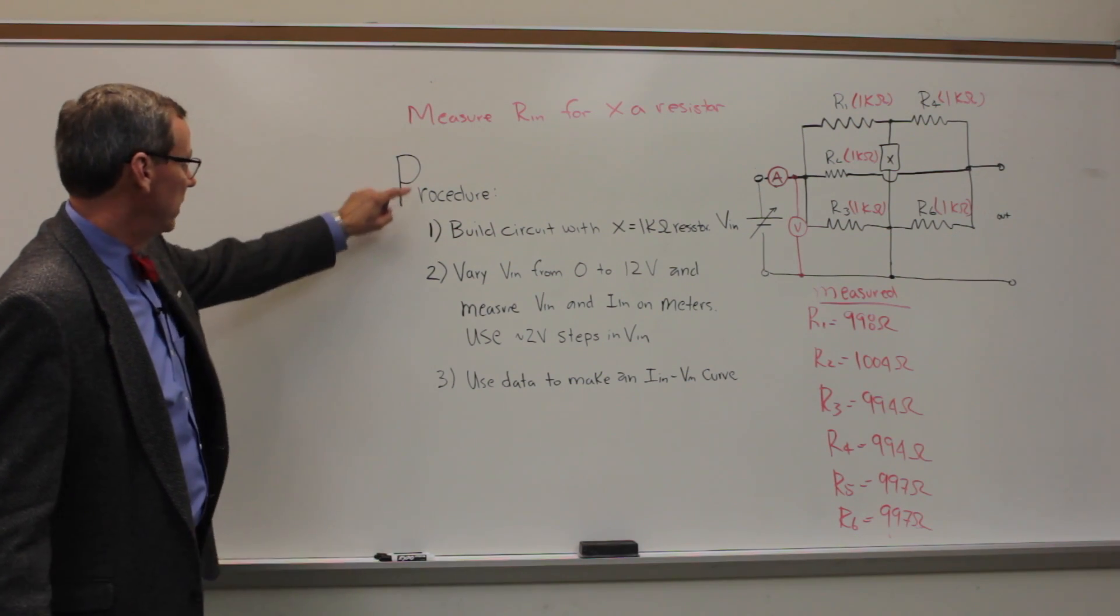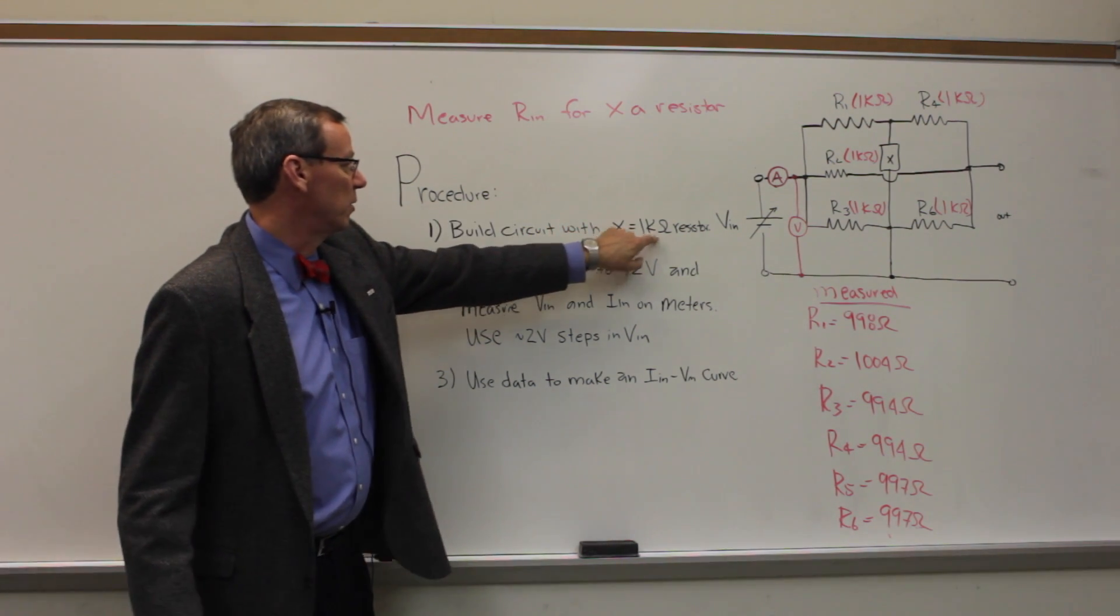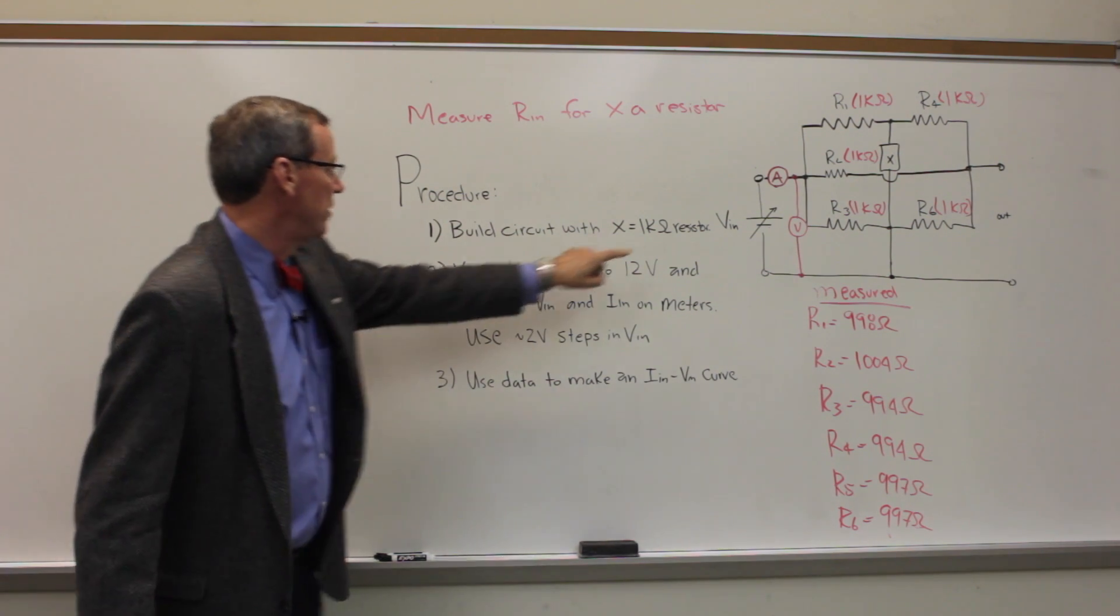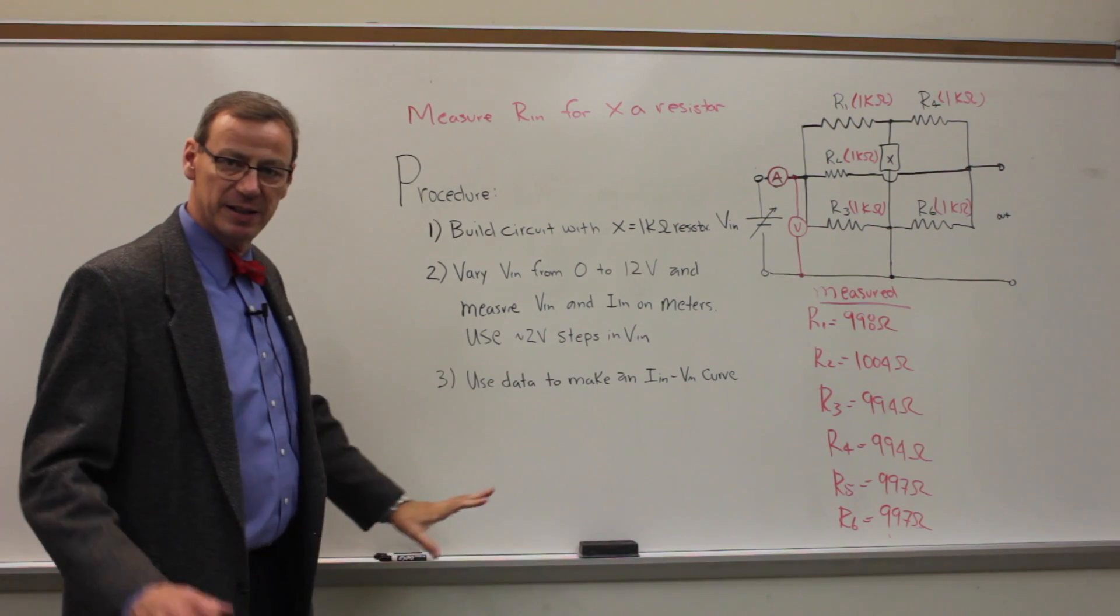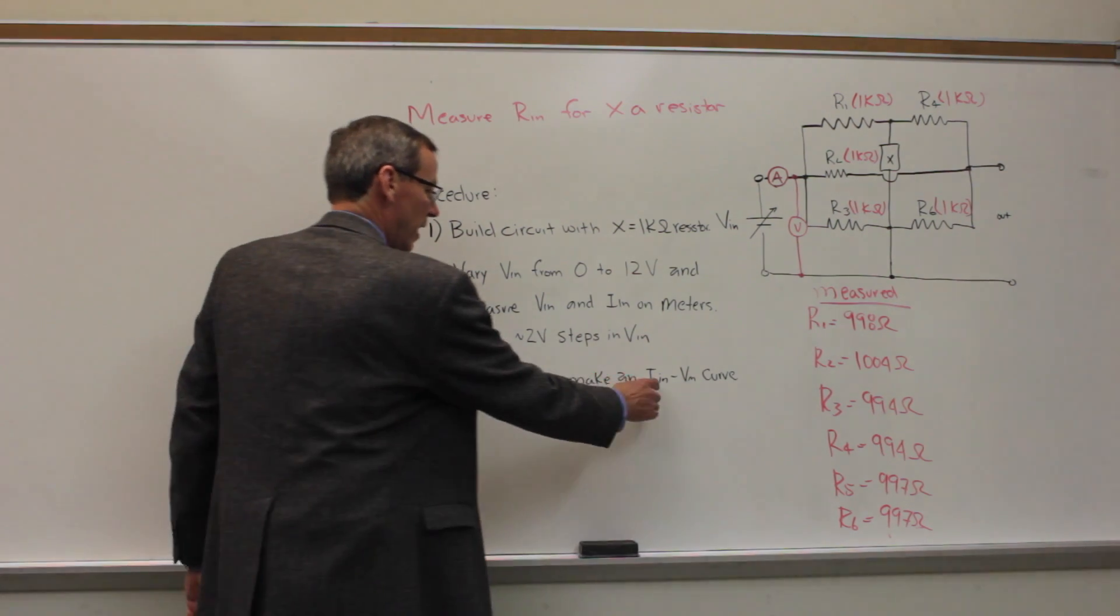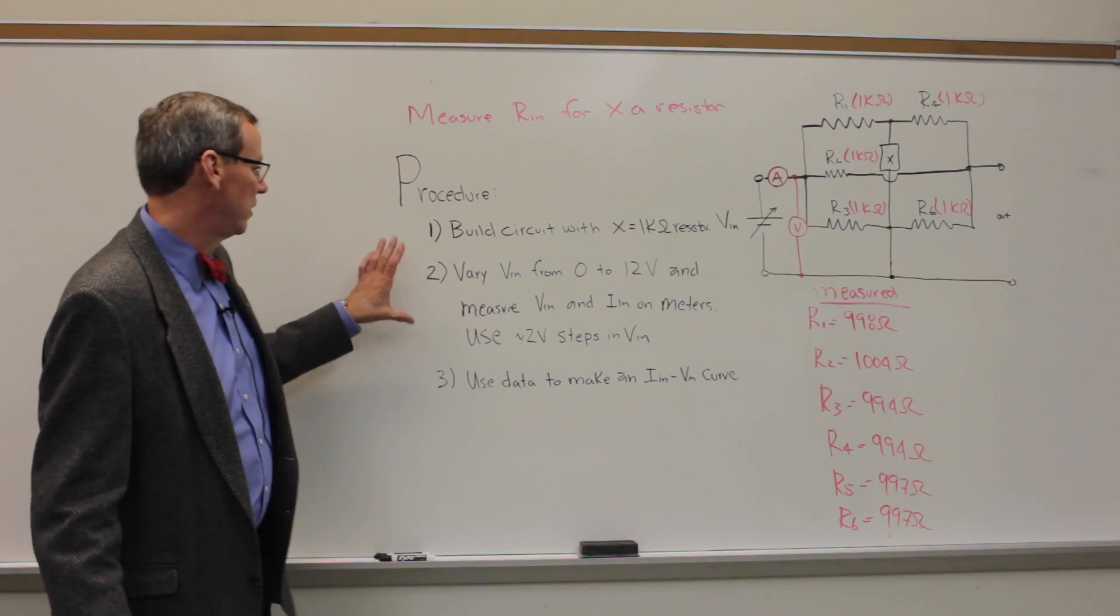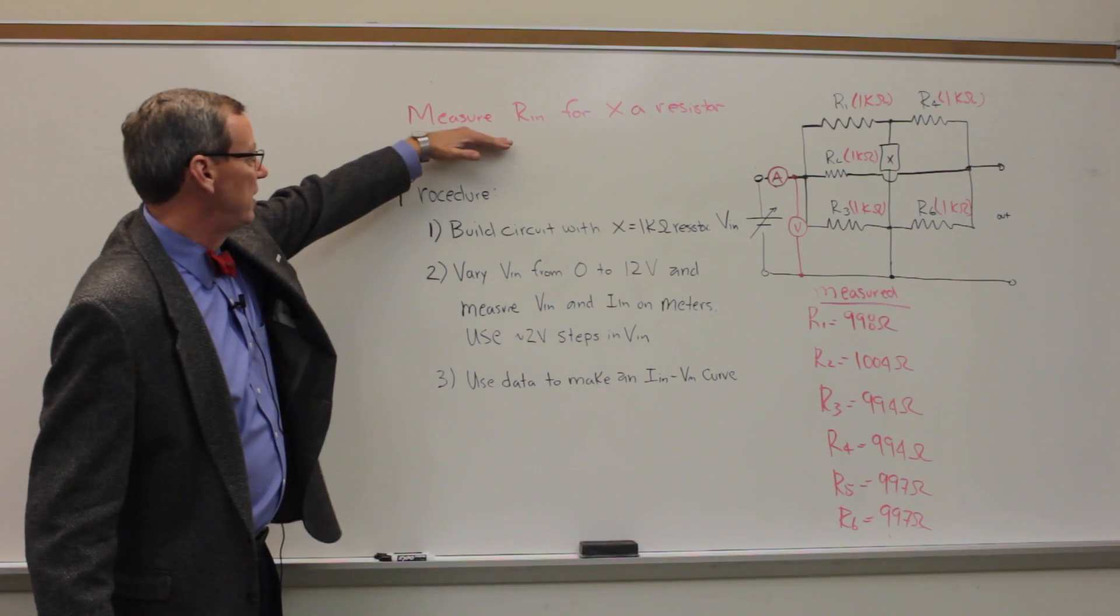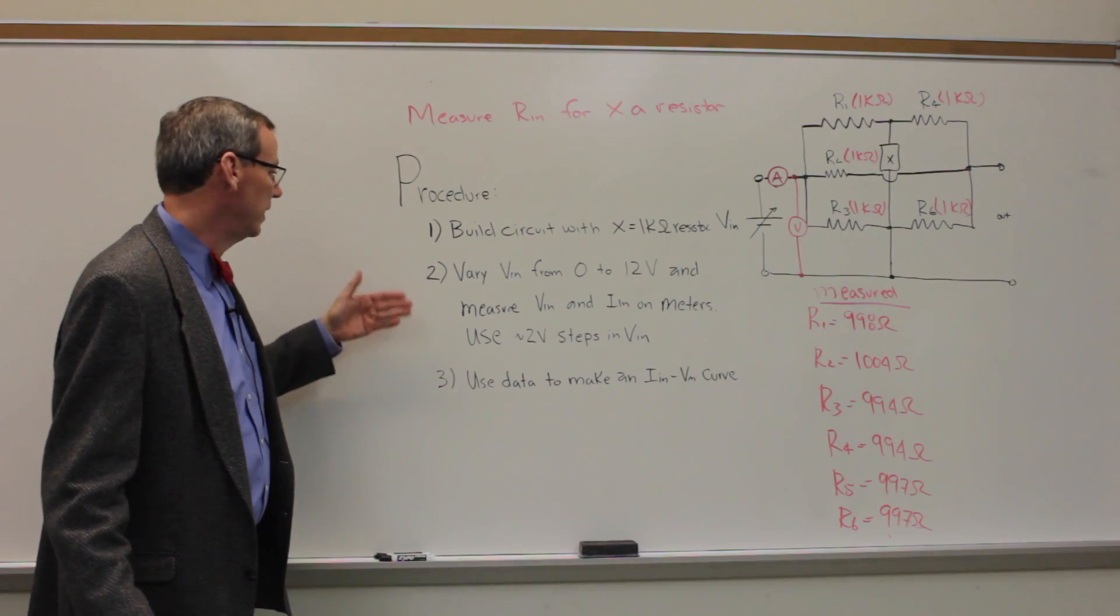So here we've got a much better procedure here. We are measuring R_IN for the component X being resistor. So the first thing we're going to build the circuit shown with X equal to 1 kiloohm resistor. So R5 is this 997 ohm resistor. We have the meter shown. Now we're going to vary V_IN from 0 to 12 volts and measure V_IN and I_IN on those meters. And we'll use roughly 2 volt steps in V_IN unless something unusual happens. So that's our nominal value. And then we're going to use the data to make an I_IN-V_IN curve. So we're going to plot I_IN versus V_IN to make an IV curve. And we're going to use that to produce, to measure the input resistance of this circuit. So there's a much better procedure there. It describes what we're going to do. The circuit diagram is correct, measured components, and a section title that lets us know what we're doing in this particular section. All very important. So if you look at the one in the sample, you'll see all of these components there.